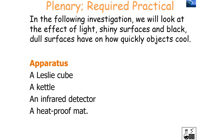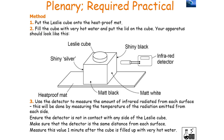In this investigation you're going to require a Leslie cube, a kettle, an infrared detector, and a heat proof mat. You'll put the Leslie cube on the heat proof mat and fill it with very hot water, then put the lid on the cube. You then use the detector to measure the amount of infrared radiation from each surface by measuring the temperature of the radiation emitted from each side. Ensure the detector is not in contact with any side of the cube and that it is the same distance from each surface. Measure this value one minute after the cube is filled with very hot water.